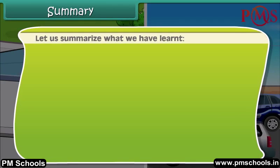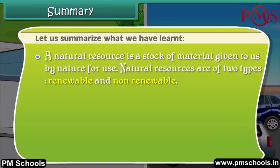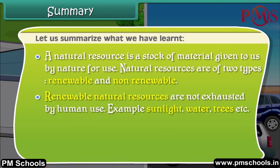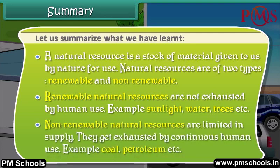Let us summarize what we have learned. A natural resource is a stock of material given to us by nature for use. Natural resources are of two types: renewable and non-renewable. Renewable natural resources are not exhausted by human use — examples include sunlight, water and trees. Non-renewable natural resources are limited in supply and get exhausted by continuous human use — examples include coal and petroleum.